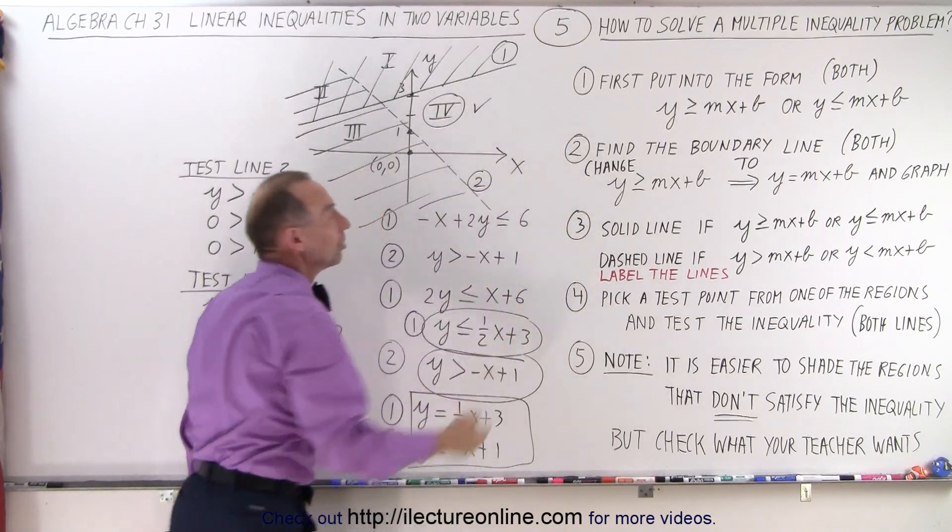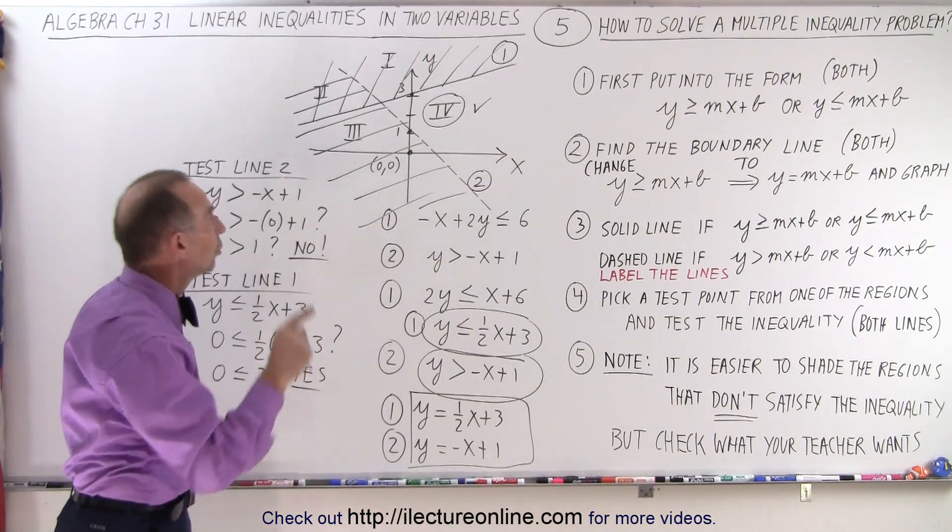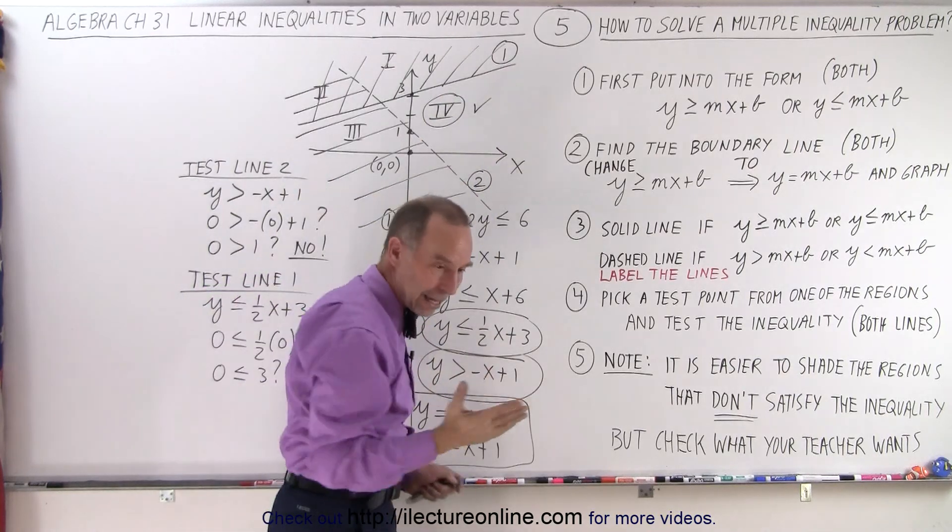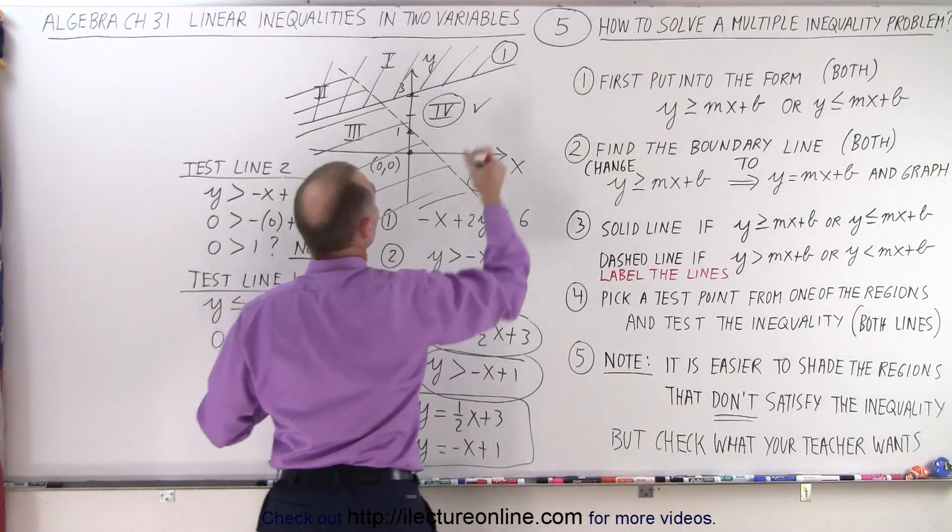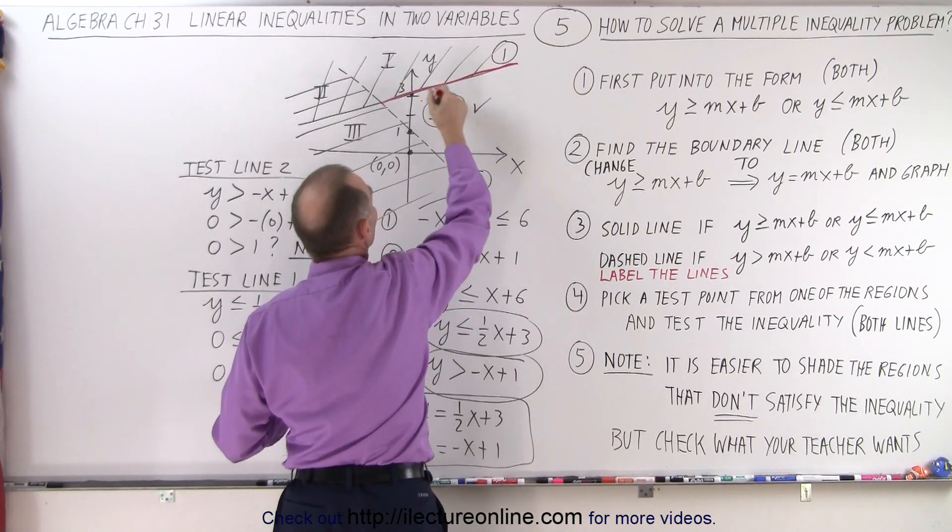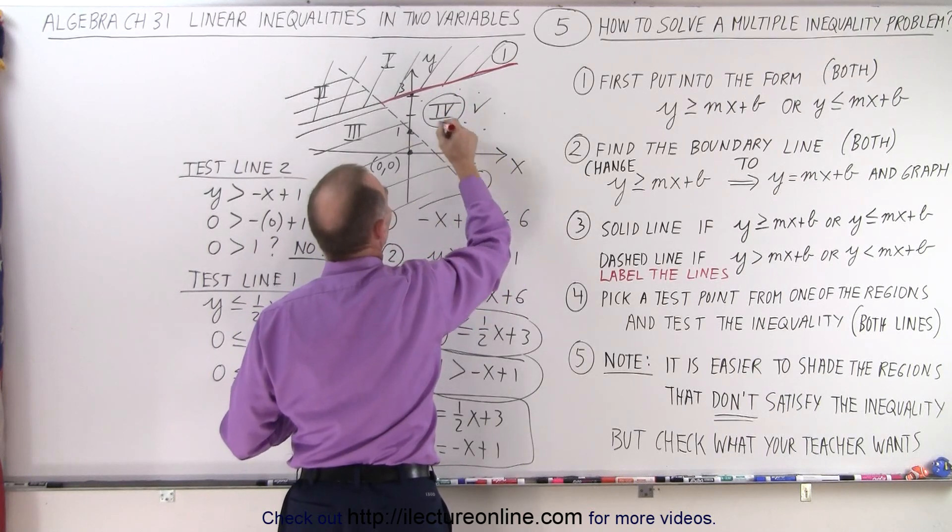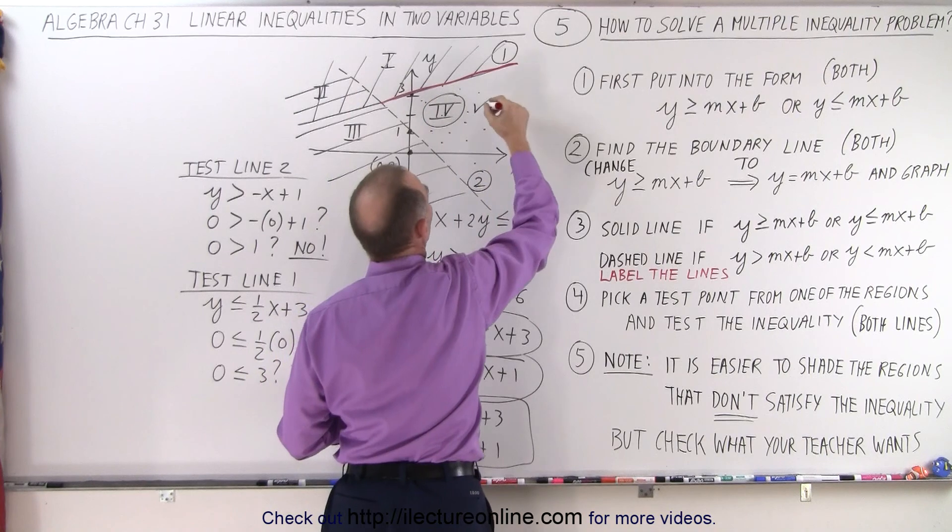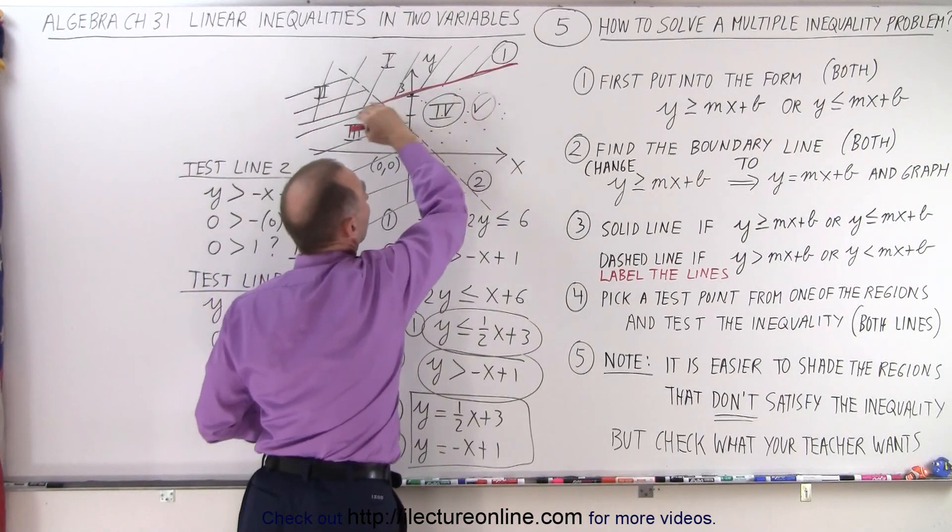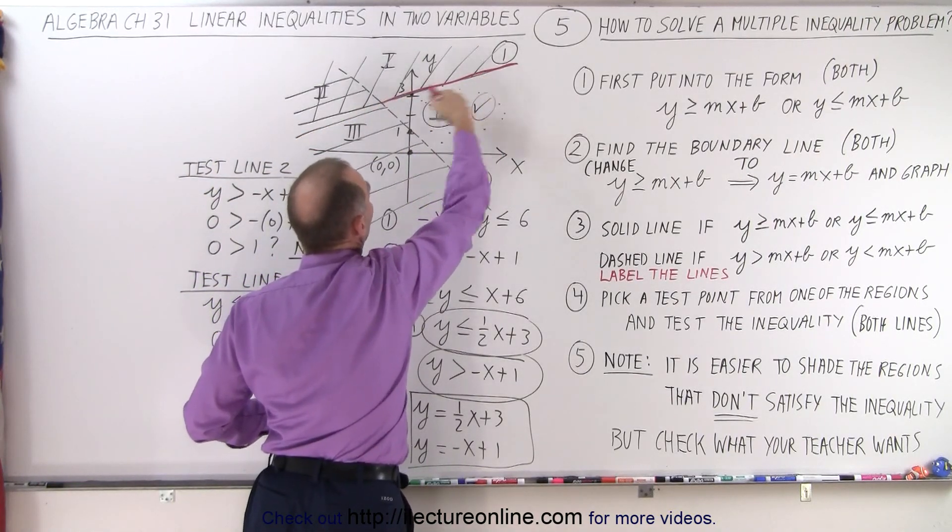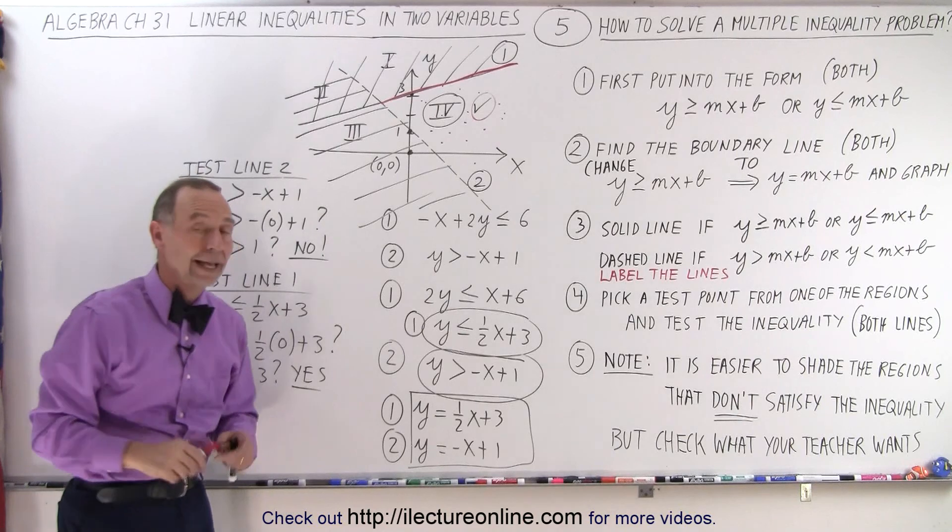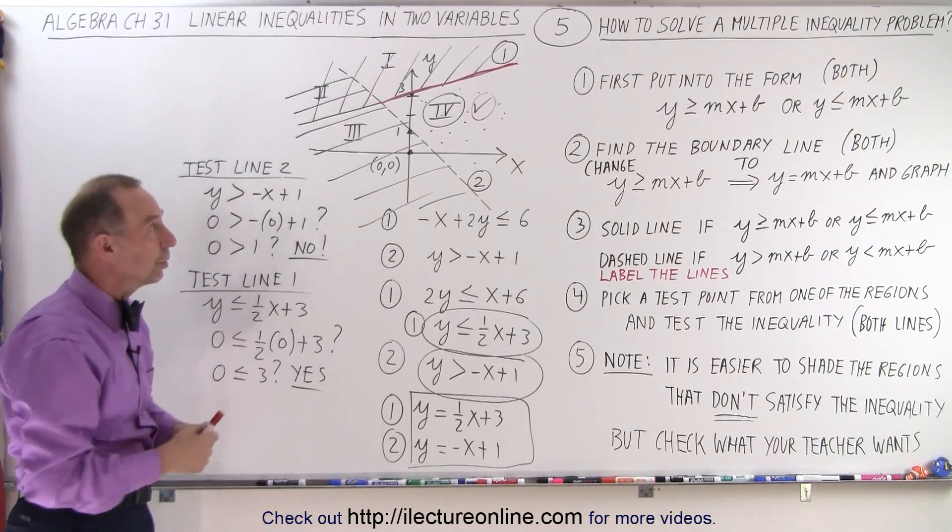That means this unshaded region is the solution to the multiple inequality problem, including the points on this solid line. I'm going to mark this region, not including the dashed line, and this region right here. All that satisfies the inequality. I typically just leave it blank, and I do color the line solid that satisfies the inequality. And that's how you find the region in a multiple inequality problem.